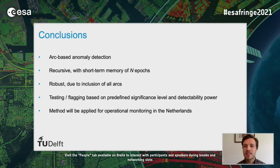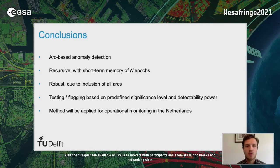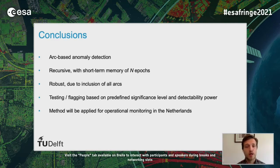To conclude: I've shown an arc-based anomaly detection as a new systematic detection method. For each epoch, the same flagging procedure looks for anomalously behaving arcs, incorporating a short-term memory via flag count. The method is robust since it uses all arcs toward every single point, and is based on a predefined significance level. The methodology was tested on simulated datasets with interesting results. The province of Limburg has decided to implement this arc-based methodology, currently in development and hopefully soon operational in the Netherlands.